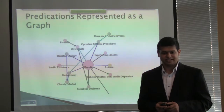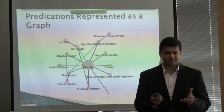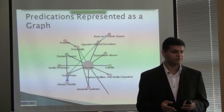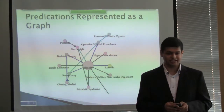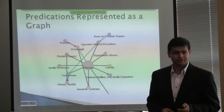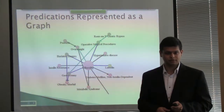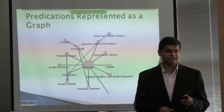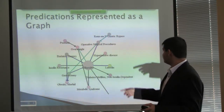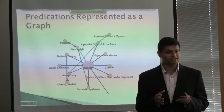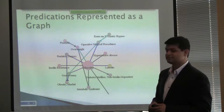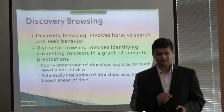For example, in this case, the subject or the object is obesity, and we are extracting all the predications that are connected to this concept. The edges would represent a certain kind of predicate, and they are color-coded.